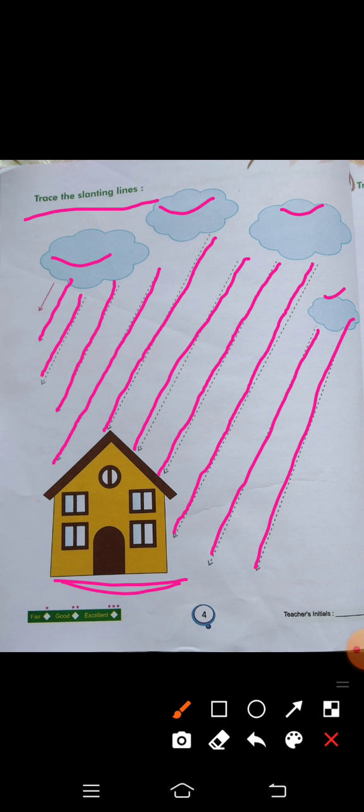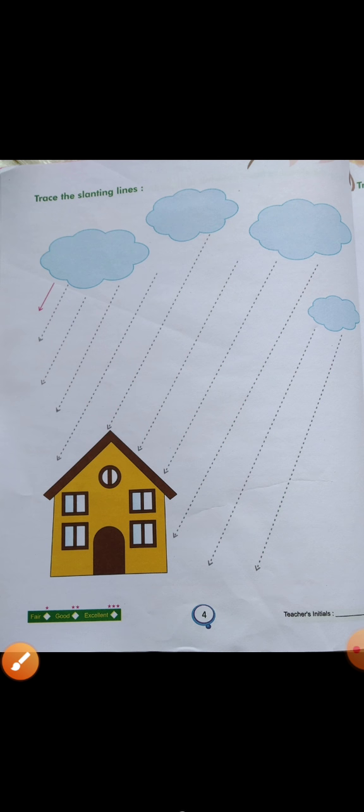Yeh hamaari slanting line hai, sorry standing nahi thi. Yeh hamaari slanting line thi, okay. Standing toh kya hoti ekdam seedhi hoti hai. Okay students, slanting line hai hum log yeh complete kiya hai aaj. Yeh aapka class work hai aacche se aap complete karengi, class group mein send karengi. Thank you students, thank you very much all.